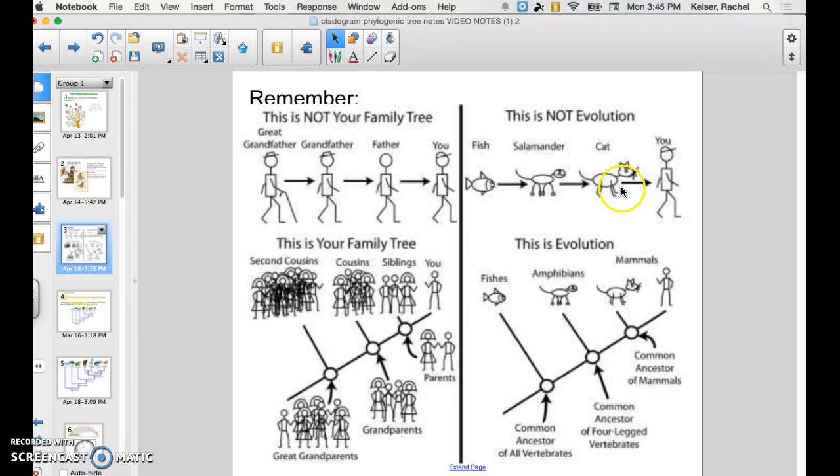So a good thing to remember when we are talking about cladograms is cladograms show relatedness among species based on certain traits. And so we're not talking about how fish evolved into a salamander. We're talking about how fish and salamanders or amphibians show a recent common ancestor and how their traits suggest a recent common ancestor. So that's something to keep in mind as we're going through this video.